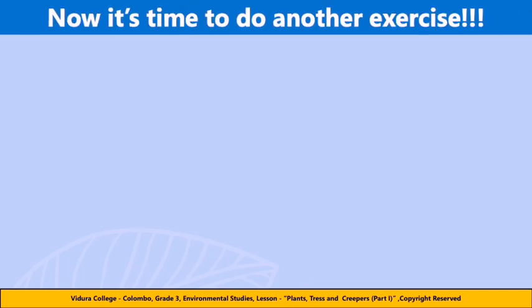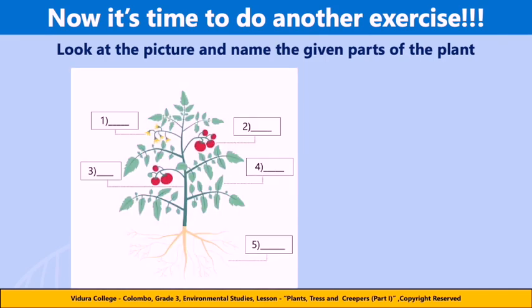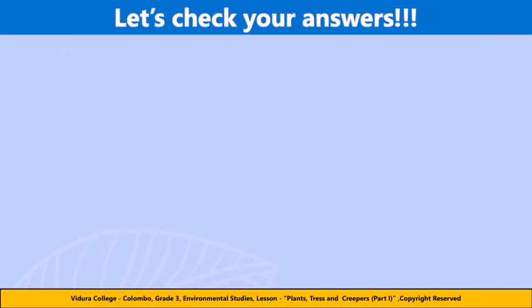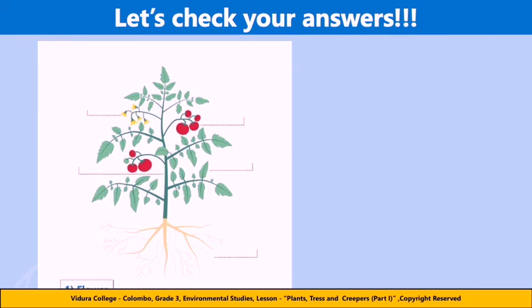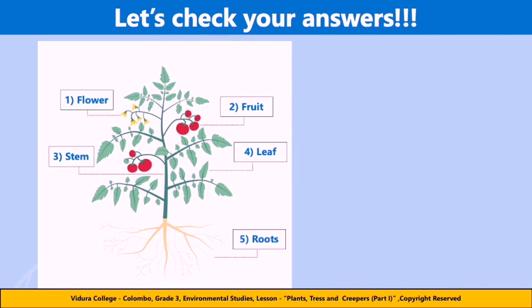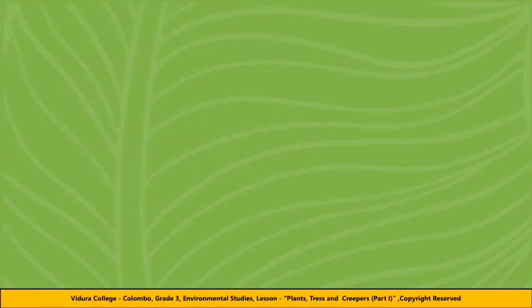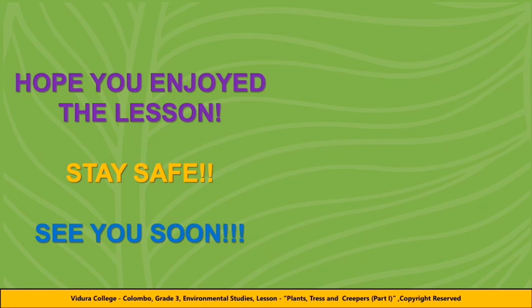Shall we do another small exercise? Look at the following picture and write the parts of the plant in front of the given numbers. Now it's time to check your answers: number one — flower, number two — fruit, number three — stem, number four — leaf, number five — roots. You did a great job! I hope that you enjoyed the lesson, so stay safe at home. See you soon, bye bye!